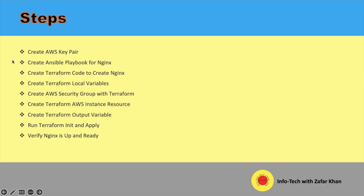Now we will create a Terraform code to create Nginx. We will include variables as well as a security group, then EC2 instance, and then output variable as well.